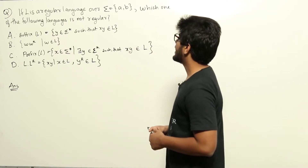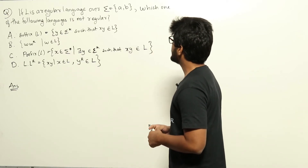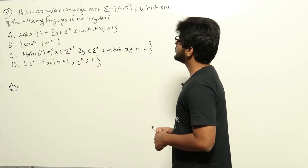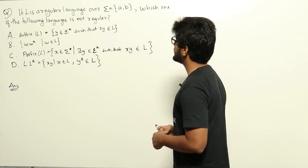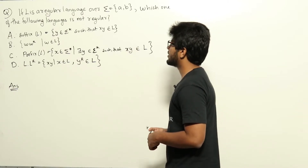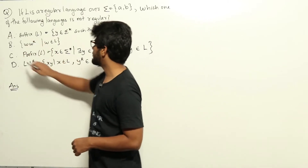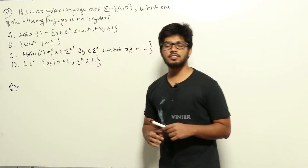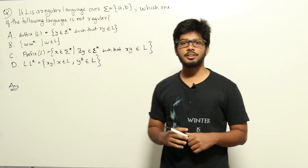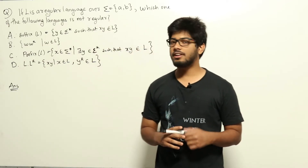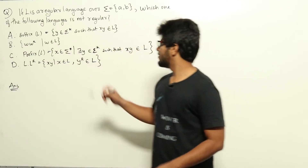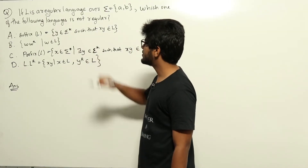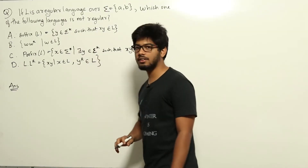If L is a regular language over epsilon equals {a, b}, which one of the following languages is not regular? Four options have been given. This is a question from theory of computation regarding regular languages, and we need to look at all options to find which among these is not regular.